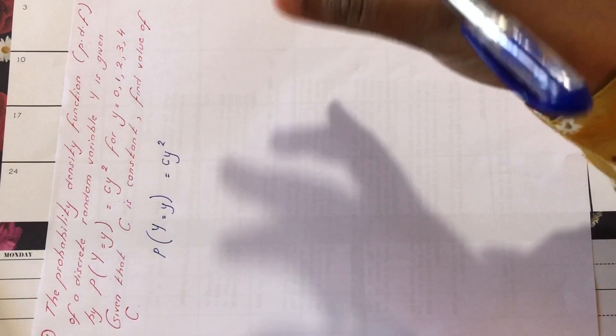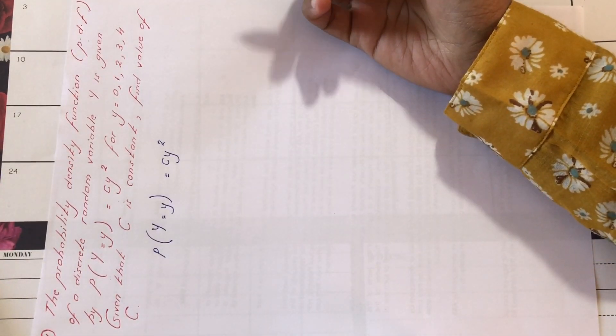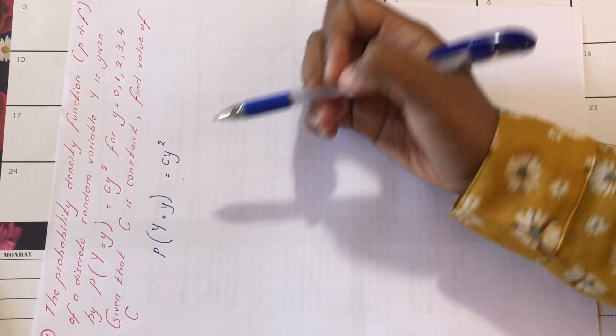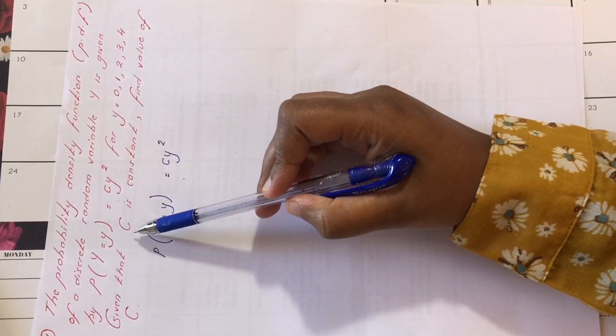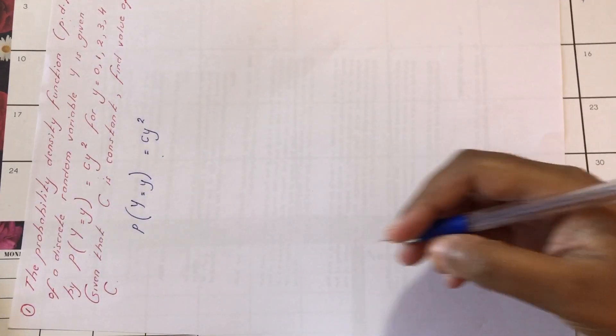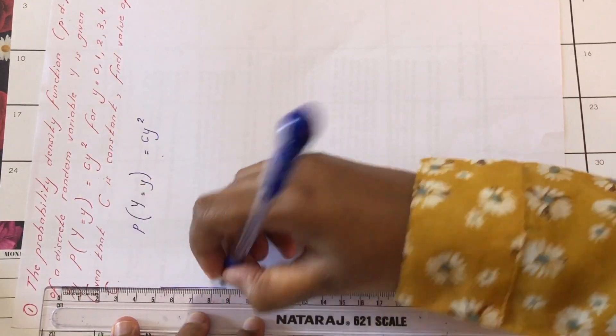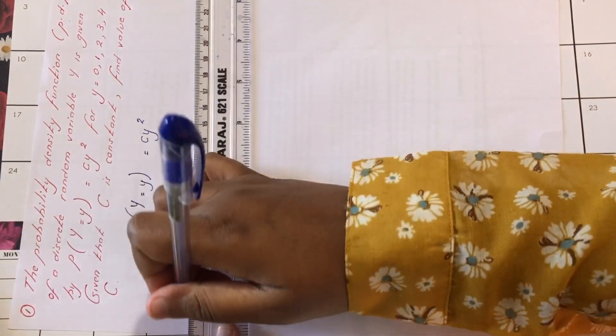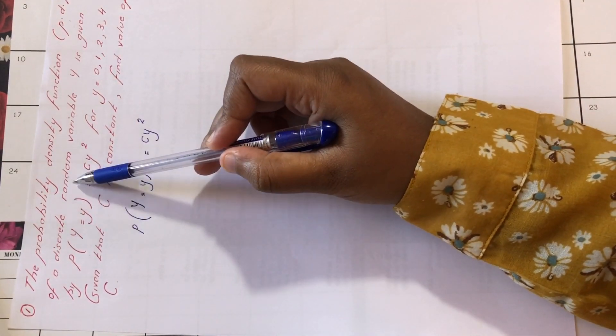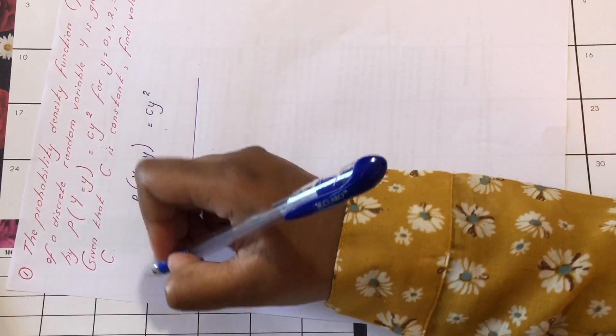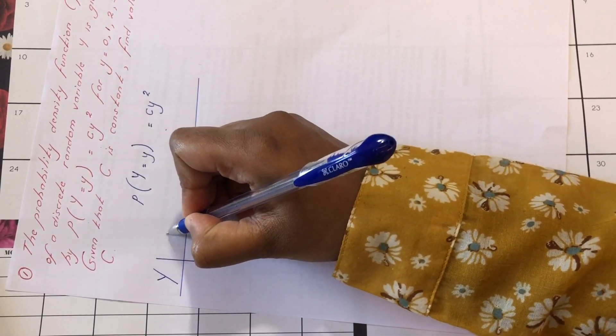The pdf can either list the probability individually or summarize them in a formula. So this function is valid for values 0 to 4. So before we can find the value of c, the first thing is we draw the table.